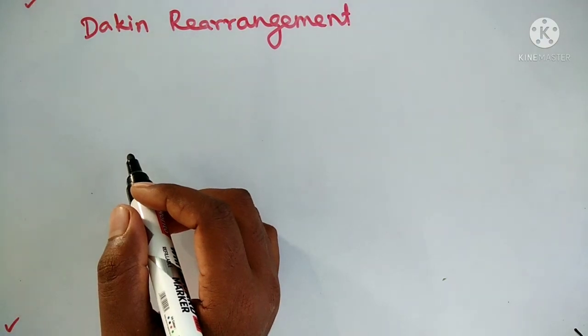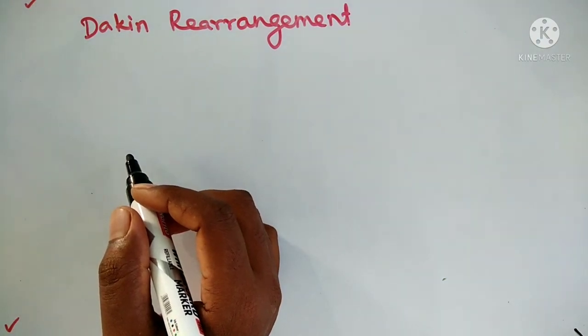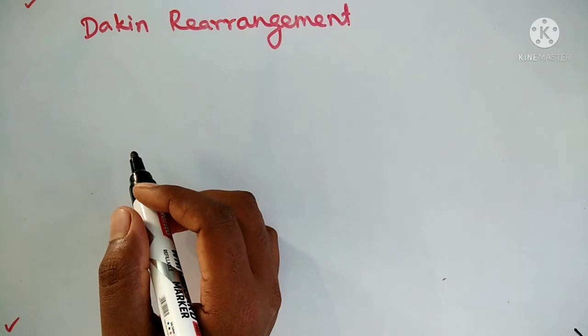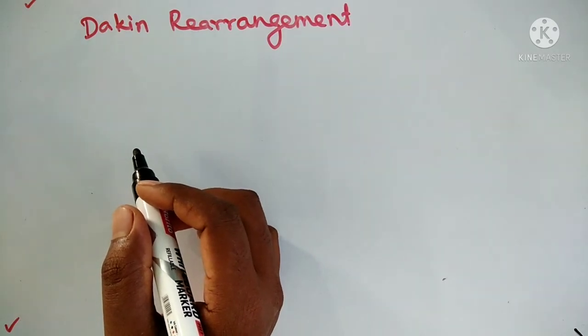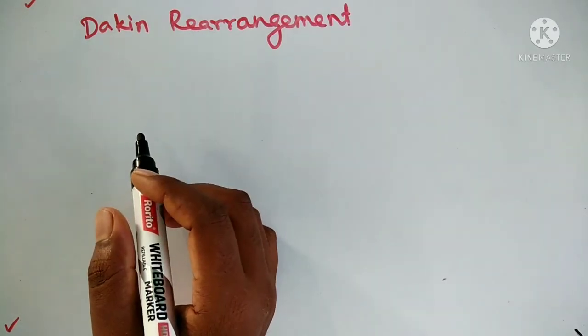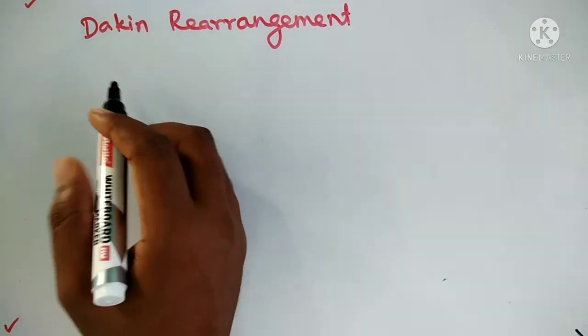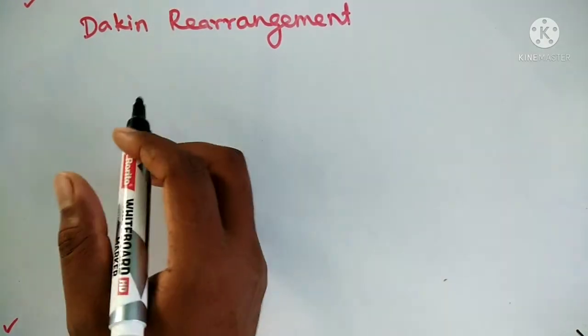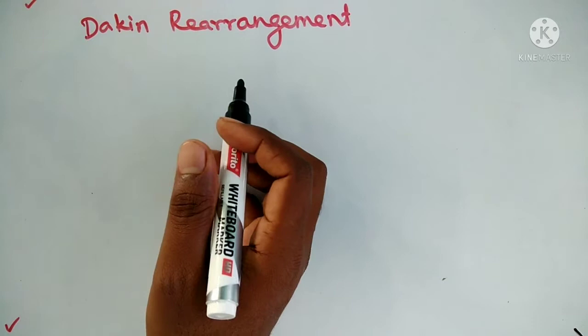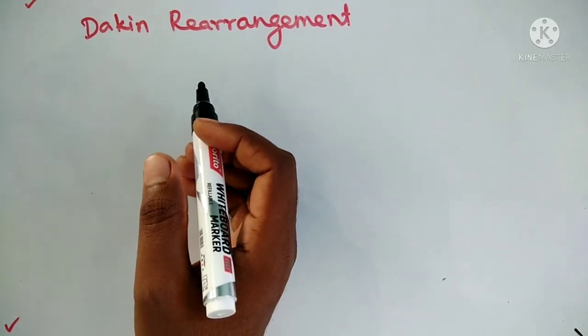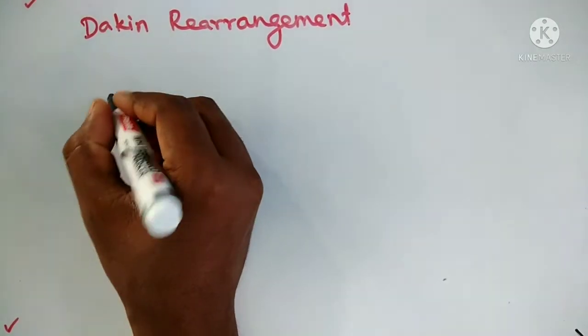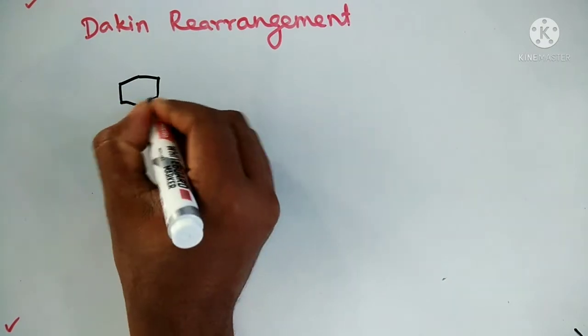Hello all, welcome to my YouTube channel PK Chemistry. In the previous lecture we discussed Baeyer-Villiger oxidation rearrangement. In this lecture we are going to discuss Dakin rearrangement. Dakin rearrangement is nothing but the conversion of catechol from salicylaldehyde.